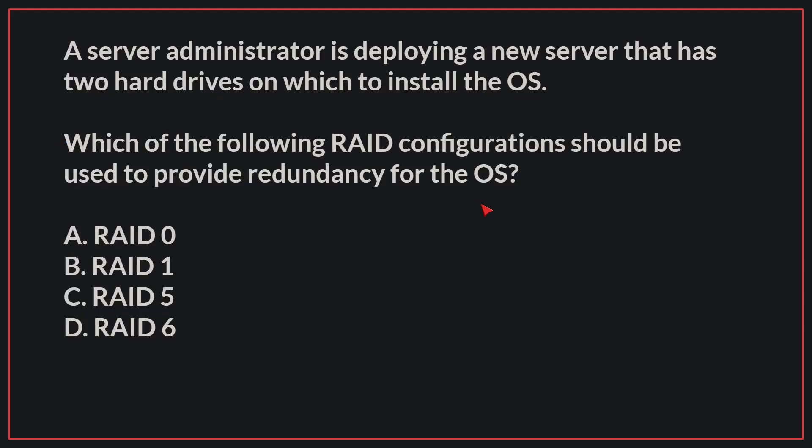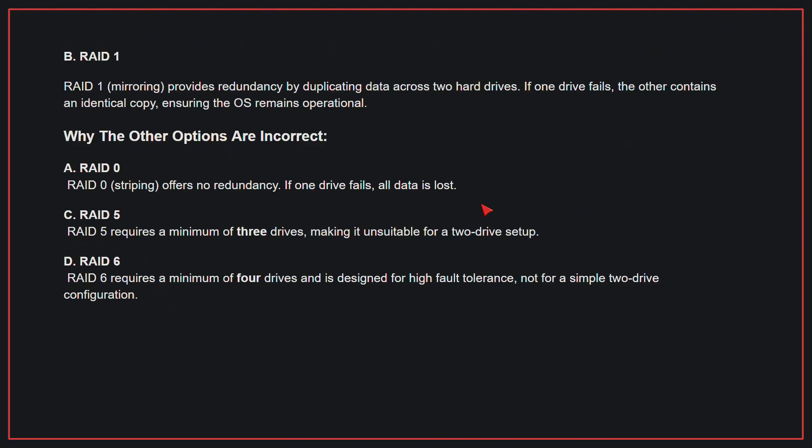A server administrator is deploying a new server that has two hard drives on which to install the OS. Which of the following RAID configurations should be used to provide redundancy for the OS? The correct answer is B, RAID 1. RAID 1, also known as mirroring, provides redundancy by duplicating data across two hard drives. If one drive fails, the other contains an identical copy, ensuring the OS remains operational.